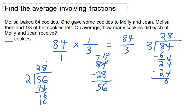And as you can see, 56 divided by 2 is 28. So on average, Molly and Jean had 28 cookies.